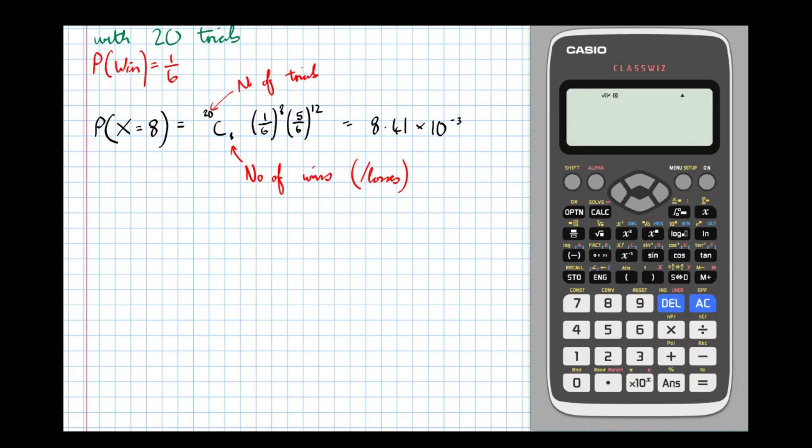But the calculator does a little bit more for you here. Because if we've got a binomial model, let's go into distribution mode, mode 7 on the calculator. We're going to go for this one here, number 4, the binomial probability distribution. And we're going to go for variable. We'll discuss what list means at a later time. But now we'll go for variable. And there we go, we'll get the same answer.